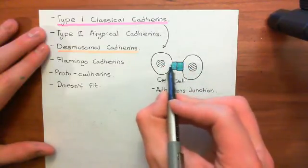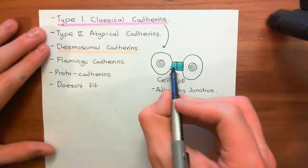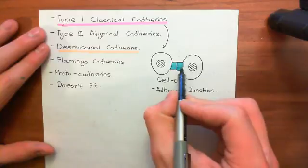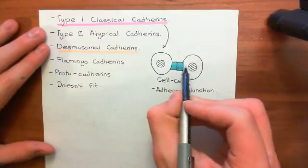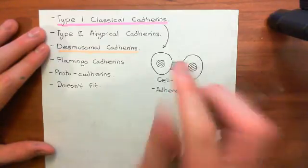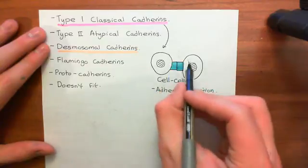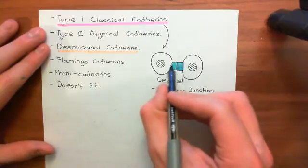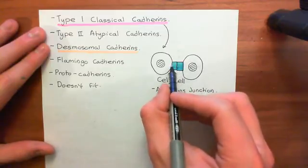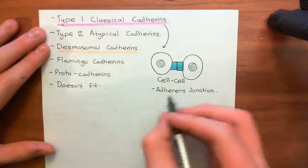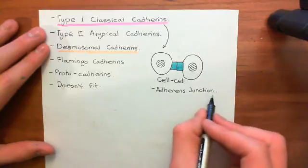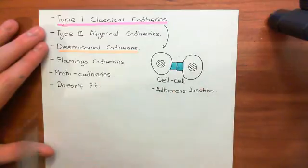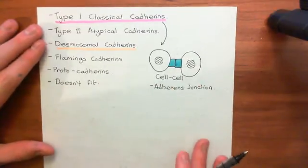When linking two cells together, you do not just take one catherin molecule on one cell and link it to a single catherin molecule on the other cell. You get a huge number of catherin molecules on each cell and make loads of these interactions all grouped together, which produces something reasonably strong. That collection of absolutely loads of them is called an adherence junction, in the case of type 1 classical catherines.